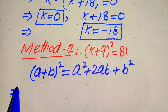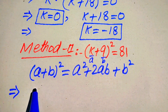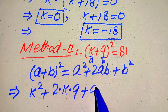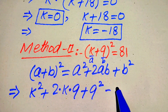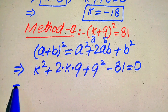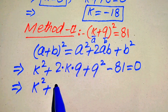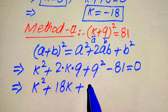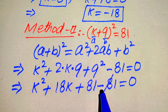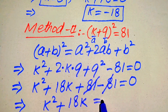According to this formula, our a is k and b is 9. So we expand it as k² + 2(k)(9) + 9². We move 81 to the left hand side, so it becomes minus 81, giving k² + 2(k)(9) + 9² − 81 = 0.